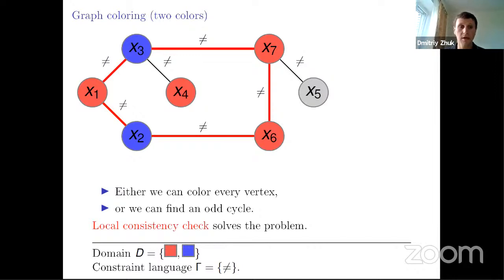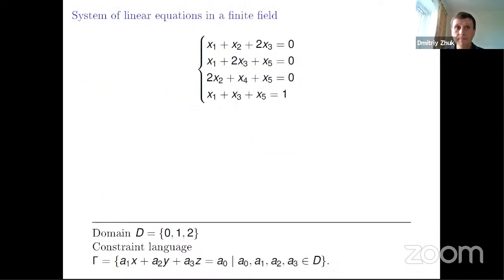My second example is a system of linear equations in the field. In our constant language, we have linear equations modular 3. We know how to solve this problem efficiently. We know that using Gaussian elimination, we can solve this problem in polynomial time. And the third and the last example, it's a graph three coloring. This time we have three colors.